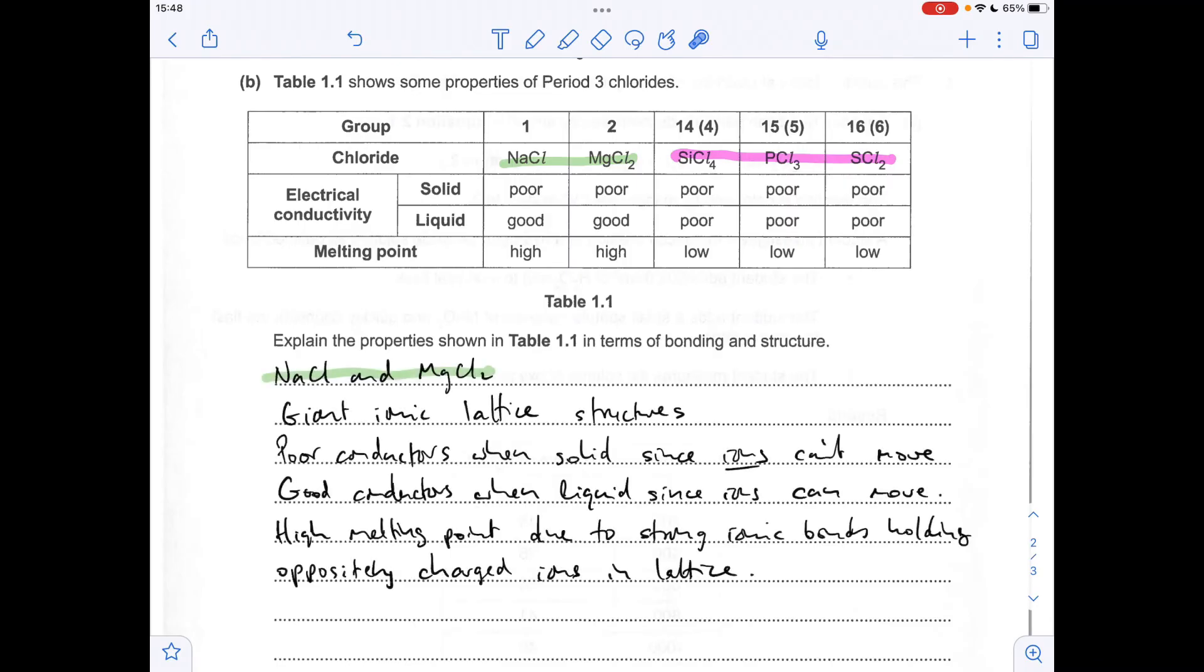So sodium chloride and magnesium chloride first, they both have giant ionic lattice structures. They're poor conductors when solid, since the ions can't move, but they're good conductors when liquid, because the ions can move. They've got high melting points, because they've got strong ionic bonds holding the oppositely charged ions together in the lattice.